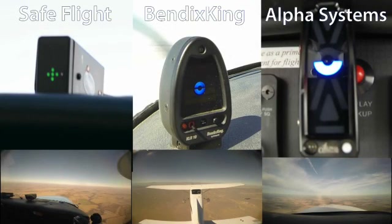Depending on the system, slips can provide very different indications. The Alpha Systems and Bendix King devices must have a clean flow of air, not obstructed by any objects on the wing. During a slip, objects such as tie-down rings or landing gear struts can obstruct the airflow and give erroneous indications. Let's see how the three devices indicate a slip.